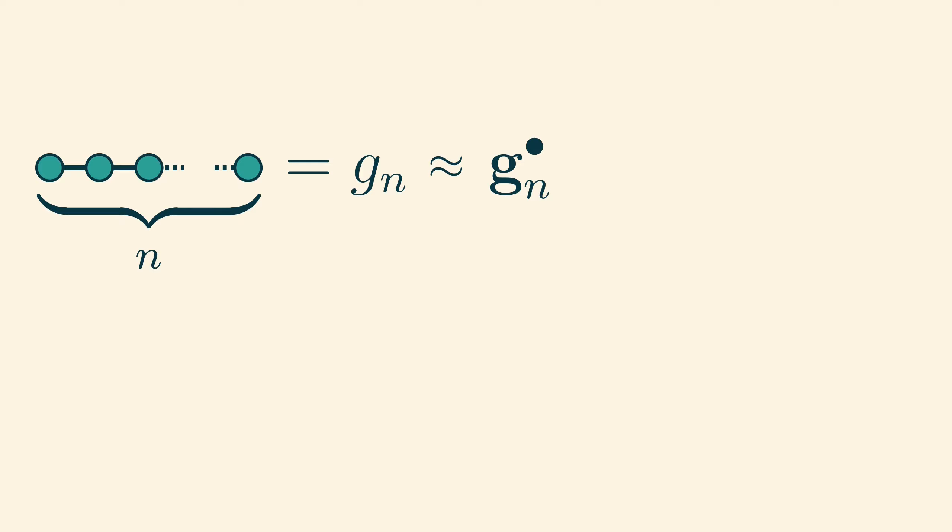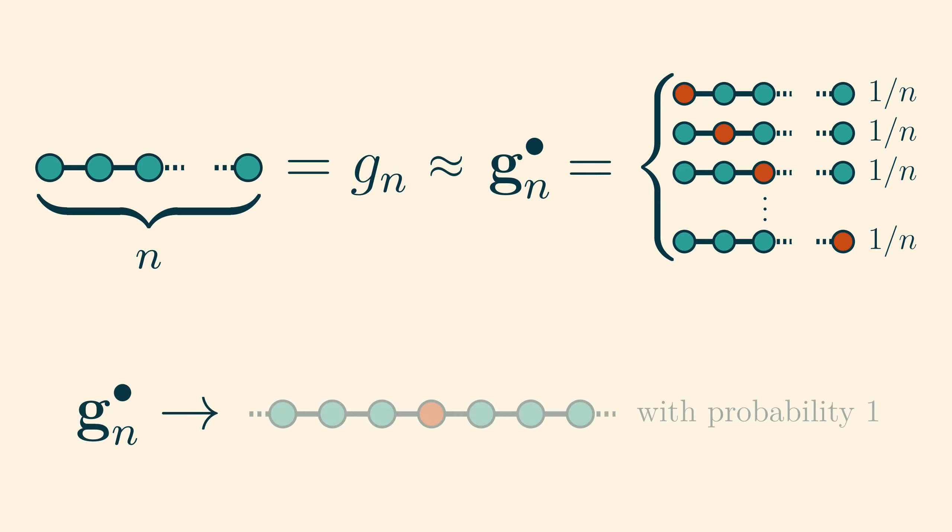So, going back to our sequence of path graphs, we identify each unrooted path graph with a random rooted graph, such that each vertex is chosen as the root with probability 1 over n. And our experiment suggested that the limit of these random rooted graphs is the random rooted graph which is the rooted two-way infinite path with probability 1. Since we are identifying the two, we might as well say that this random rooted graph is also the limit of the fixed unrooted path graphs that we started with.